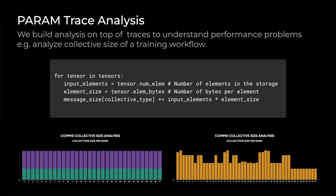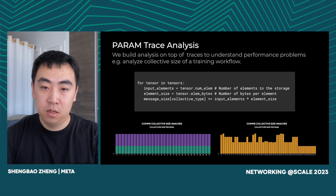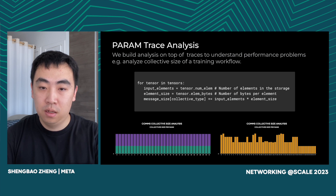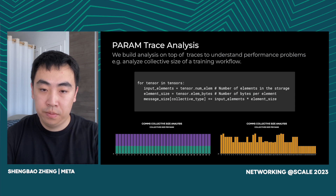We also build analysis on top of PyTorch execution trace to understand performance problems. One use case is to understand collective message size imbalance across different ranks. Collective message size is calculated by adding all the input tensor sizes together, as shown in the pseudocode. The bottom figure shows two examples of analyzing collective message size imbalance across different ranks: the left one is the balanced one, while the right one shows a significant imbalance across different ranks during AllReduce communication.